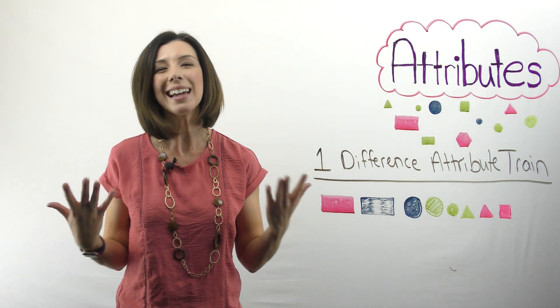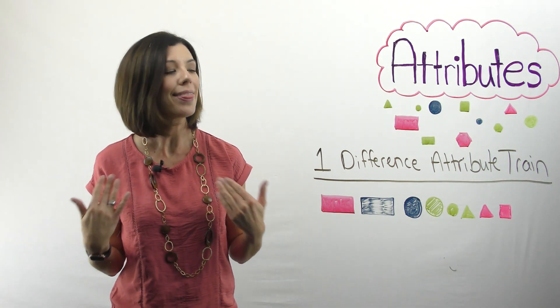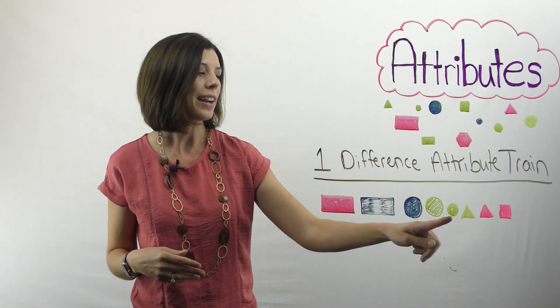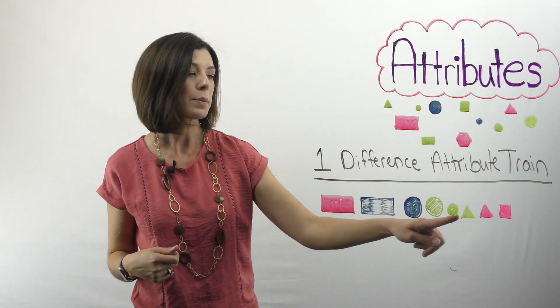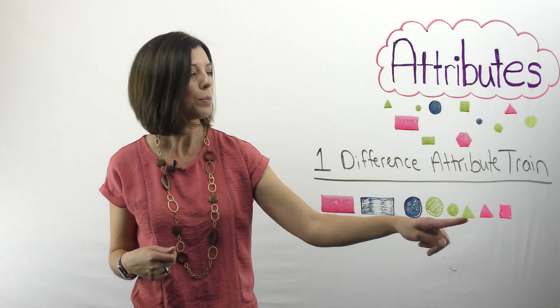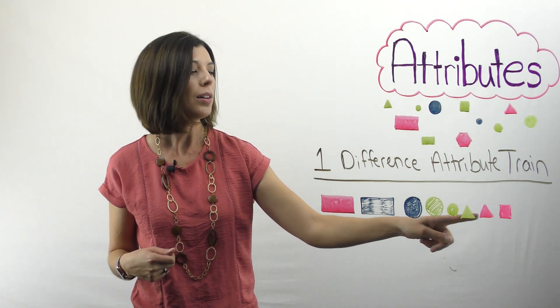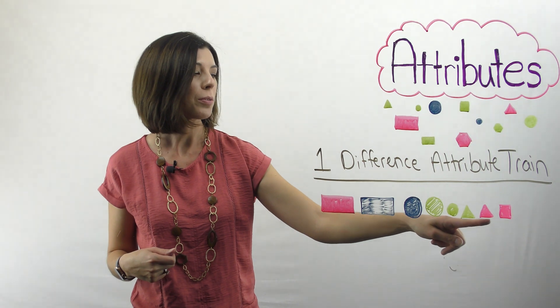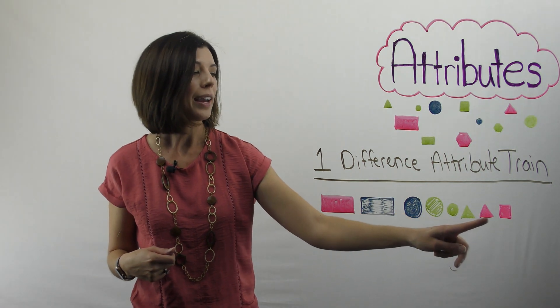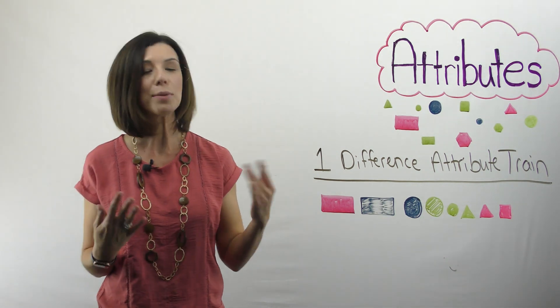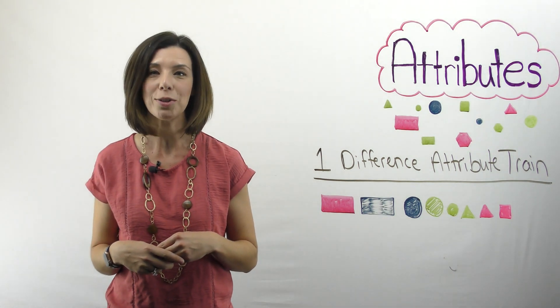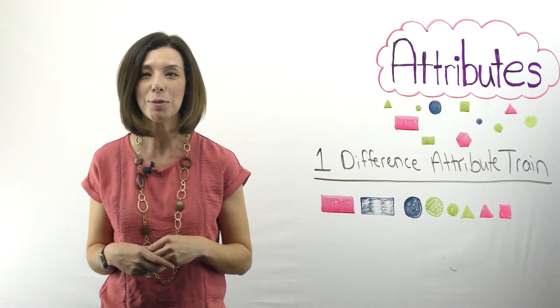Here are my shapes. Again, yours are probably going to look different than mine and that's okay. You can see that I changed this one from large to small. Then I kept it yellow and small, went to triangle, I changed my shape, I kept it small, changed my color, went to a small red triangle, kept my color, kept my size, went to a small red square. This would be an example of a one difference attribute train. Let's look at a two difference attribute train.